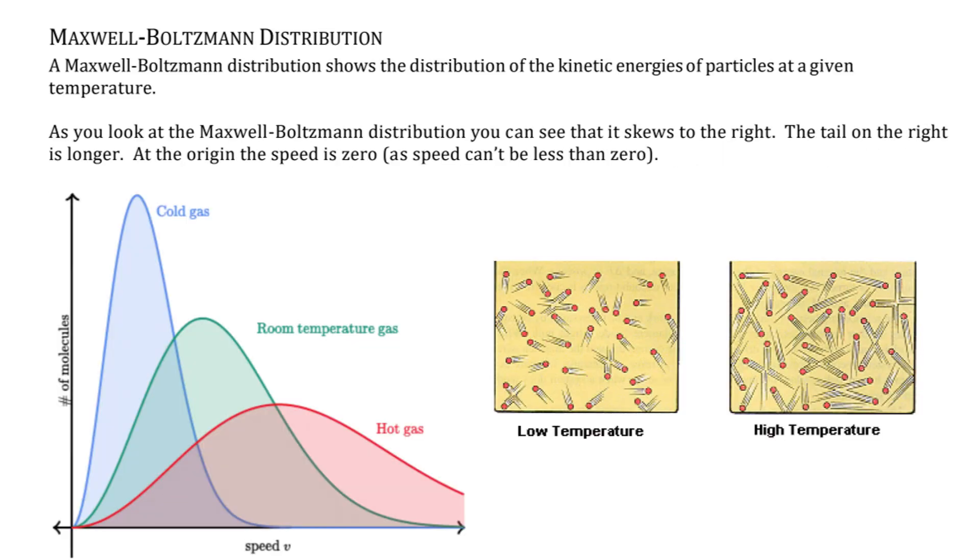Maxwell-Boltzmann distribution. This shows the distribution of kinetic energies of particles at a given temperature. So the three humps you see on this distribution, on this x and y axis of speed and number of molecules.